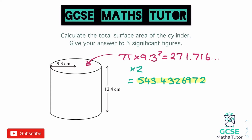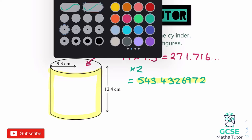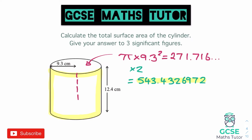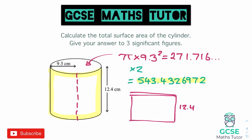Now we need to look at the curved surface around the outside. If you imagine this was a hollow cylinder and we took a pair of scissors and cut down the centre, then unravelled and flattened it out, what we would actually have is a rectangle. It would have a length of 12.4 — the height of the cylinder — and we would need to work out the other dimension, which is actually the circumference of the circle going around the top.